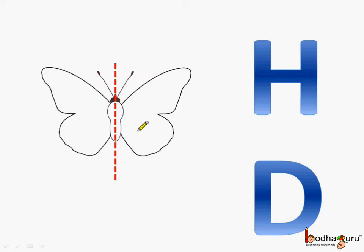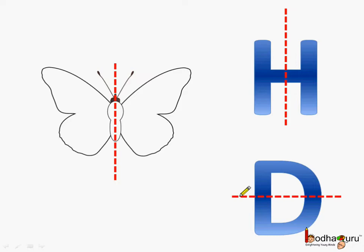They are exactly the same in size and shape. In case of the edge, this line is dividing the edge into two identical halves. Here, this horizontal line is dividing D into two identical halves.